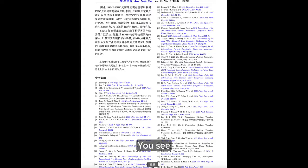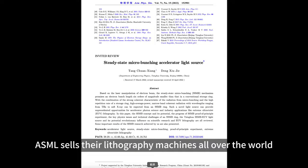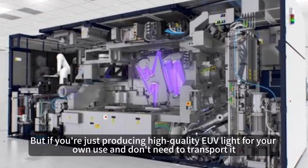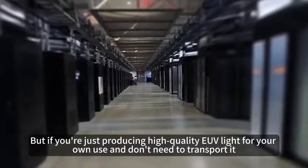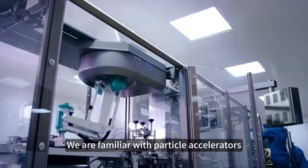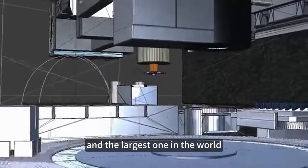ASML sells their lithography machines all over the world, so they have to be transportable and not too large. But if you're just producing high quality EUV light for your own use and don't need to transport it, size is not an issue. We are familiar with particle accelerators, and the largest one in the world, the LHC, is in Switzerland with a circumference of over 30 kilometers.